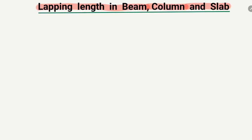I will explain this topic with the help of an example so it will be easier to understand. First of all, what is lapping length and why do we provide lapping length in structural members? Basically, the standard length of a steel bar from the company is 12 meters. Companies cannot produce bars longer than 12 meters, but if we want to construct a very high-rise building or a very long structure of more than 100 or 200 meters,